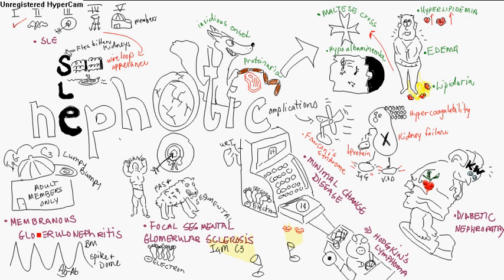Membranous glomerulonephritis is adults only. You've got capillary thickening — thick capillary walls — and an immune complex disease of really unknown etiology. It's seen in 10% of SLE patients, and is associated with infections like hepatitis B, syphilis, and malaria. Drugs like gold salts, penicillamine, or captopril are also implicated.